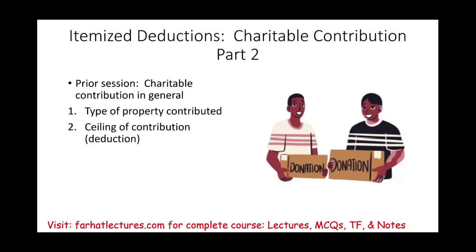Hello and welcome to this session in which we will discuss itemized deductions, specifically charitable contributions. This is part two of this series. In the prior session we looked at charitable contributions in general as an introduction. In this session we will look at the type of property contributed and what type of ceiling you will have on the contribution. The type of property means: is it cash, is it something other than cash, how do we value it? Congress is generous to a point — you can deduct charitable contributions up to a certain limit.